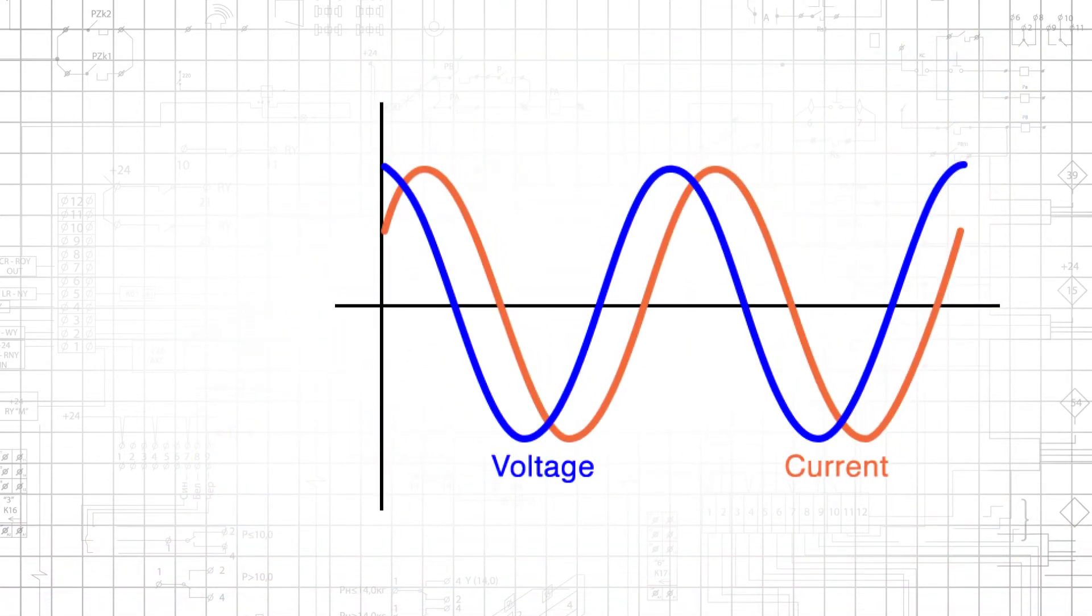The three characteristics that separate one sinusoid from another are amplitude, frequency, and phase.